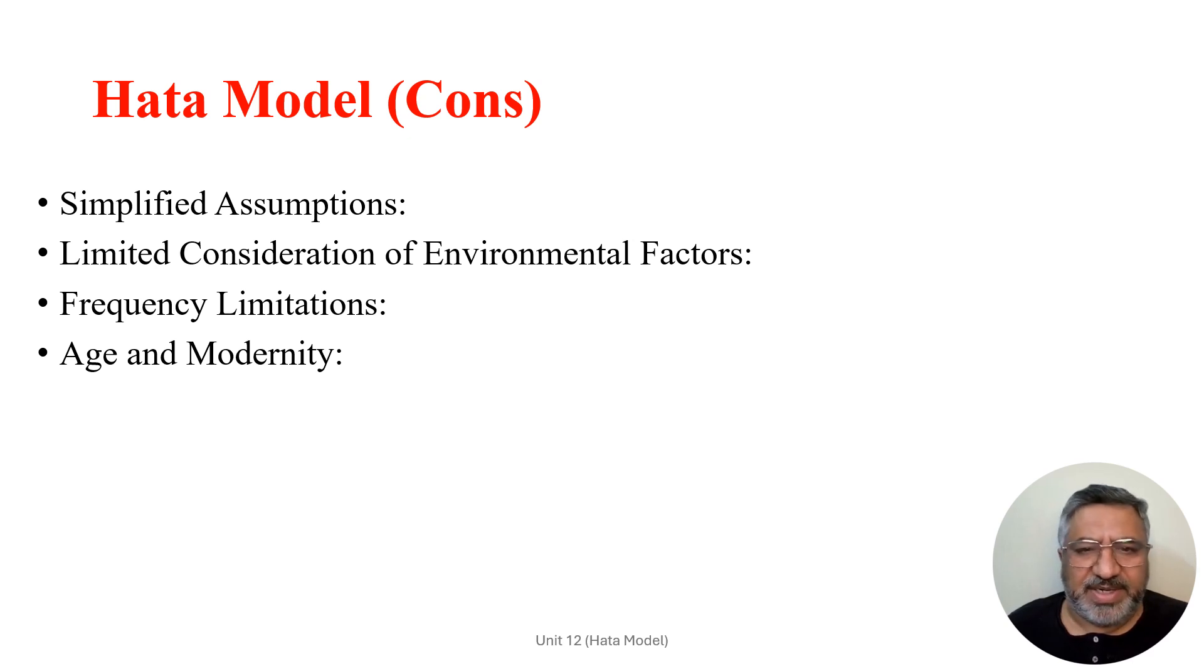The limited consideration of environmental factors is another con. The model does not explicitly account for certain environmental factors that can significantly impact propagation, such as buildings, vegetation, and terrain irregularities. This can result in less accurate predictions in complex urban or rural environments.